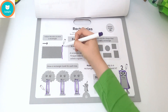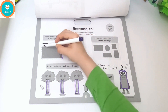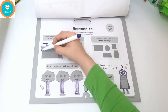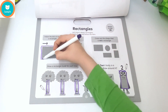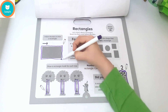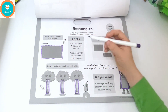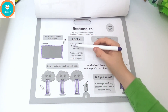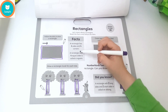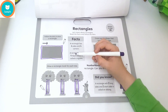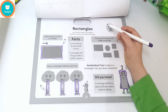Follow the dots to draw a rectangle: one, two, three and four. Facts: a rectangle has four sides and four corners. A rectangle with four equal sides is called a square.